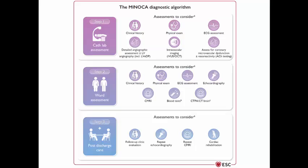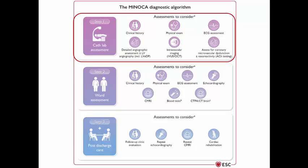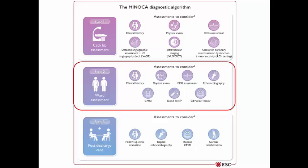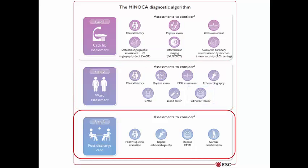The diagnostic algorithm starts with clinical history, physical examination, and ECG. Inside the cath lab: detailed angiographic assessment, plus or minus left ventriculography, intravascular imaging (IVUS or OCT), and assessment for coronary microvascular dysfunction and vasoreactivity. Additional assessments include serial ECG, echocardiography, CMR, blood tests, and CT of brain or abdomen — since extensive stroke or intracranial hemorrhage may cause dynamic ECG changes and troponin rise. Post-discharge includes follow-up, repeat imaging, and cardiac rehabilitation.